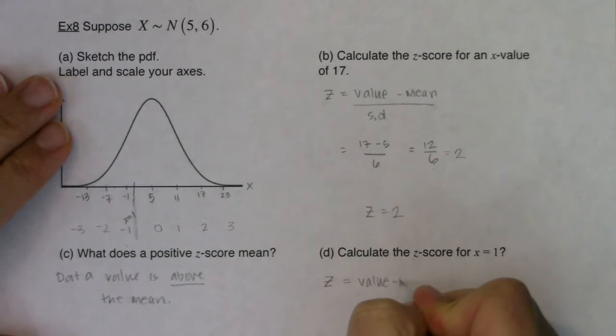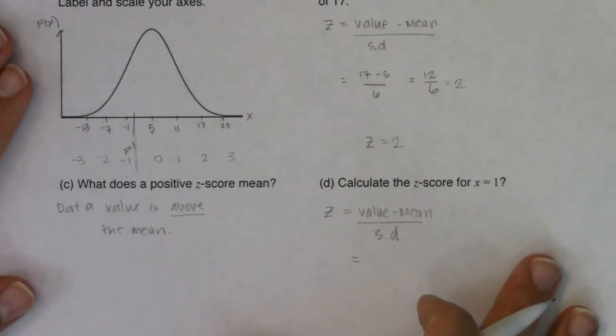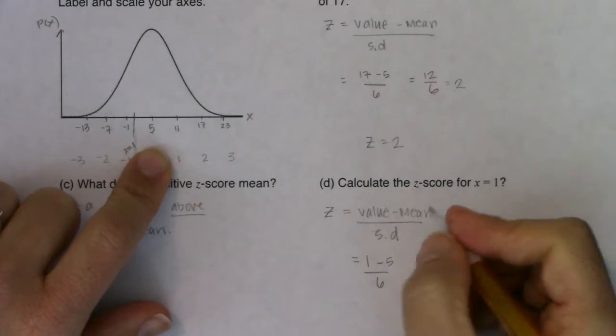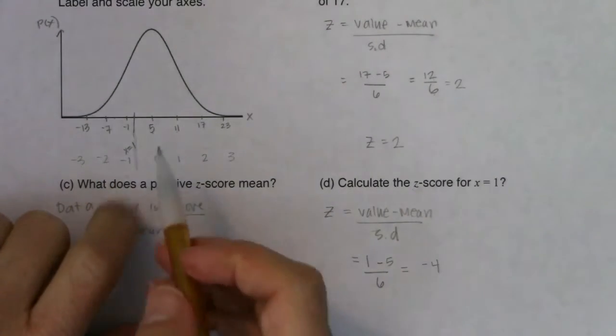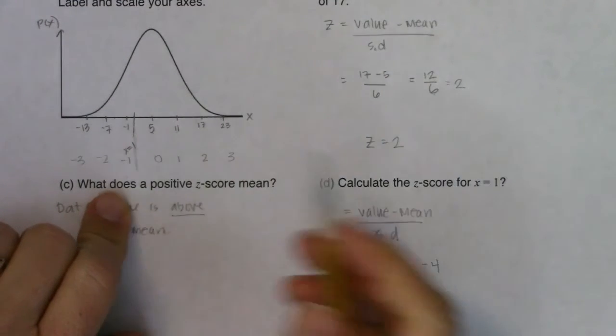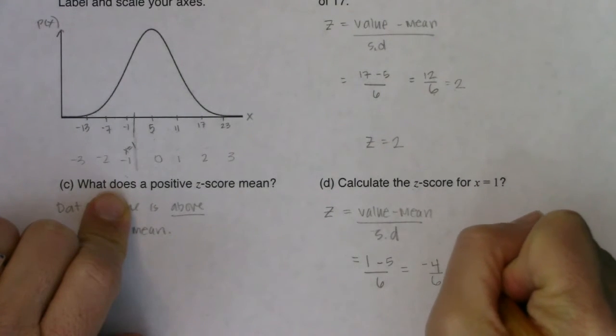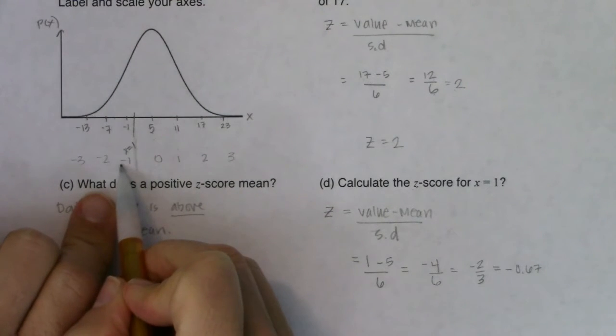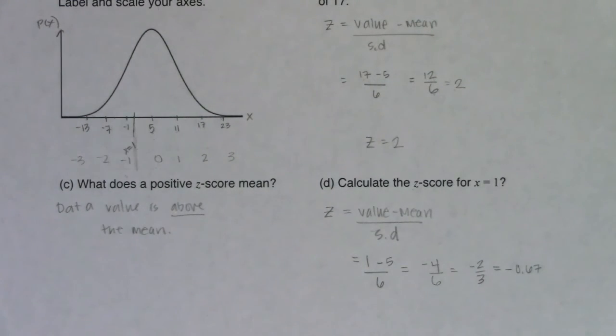So my z-score is value minus mean over standard deviation. In this case, I'm looking at 1. My mean was 5. My standard deviation was 6. So this value deviated from the mean by negative 4 units. It was 4 units below the mean, because the mean was 5 and this value was just 1. It was 4 units below the mean. So it deviated by negative 4 in ratio to a standard deviation of 6. So this is the fraction negative 2 thirds, or you could write it as a decimal, negative 0.67. And that's in line with where I thought it would be - I thought the z-score is between negative 1 and 0, and I thought it was closer to negative 1.